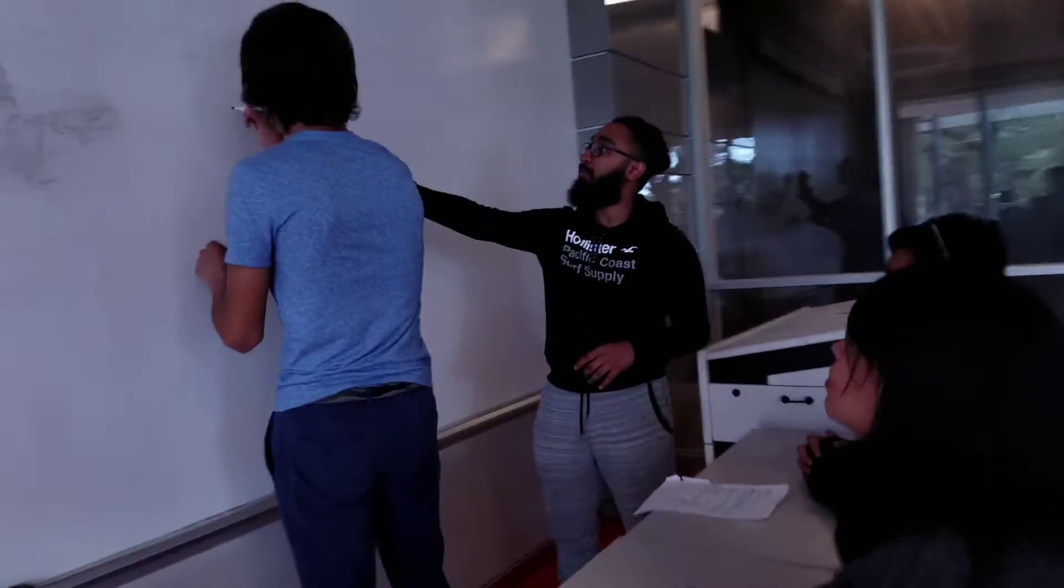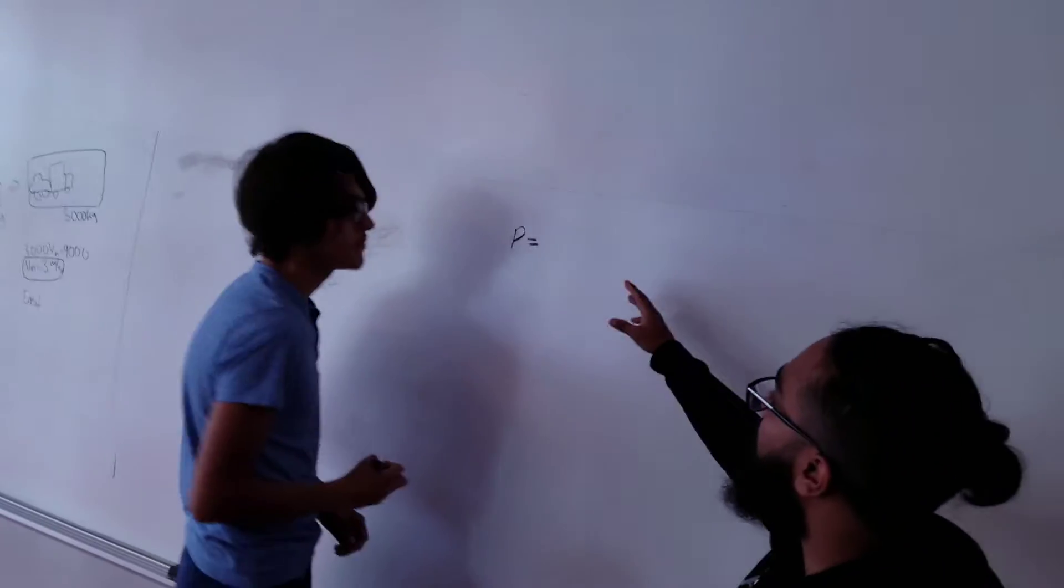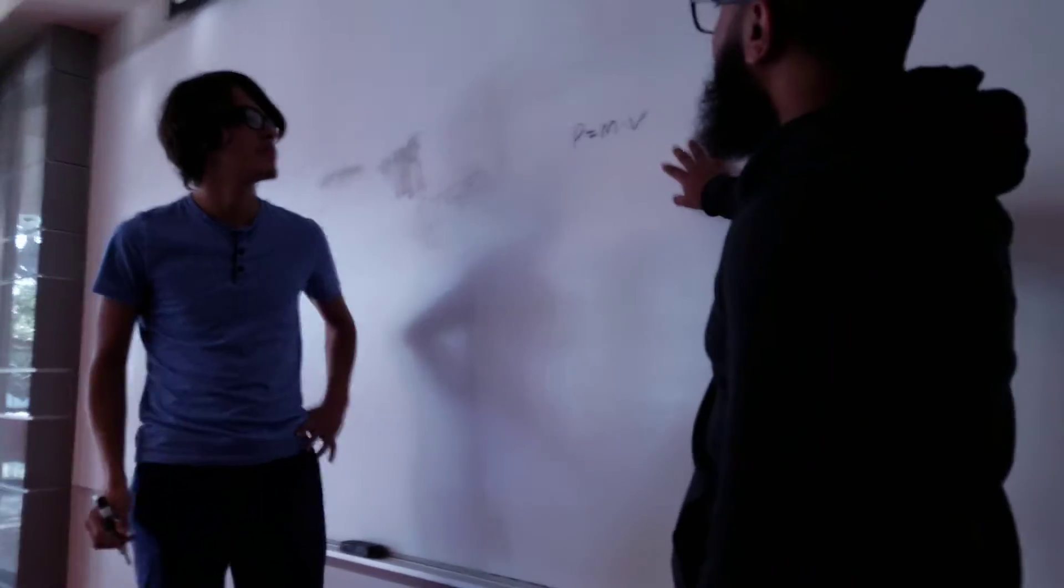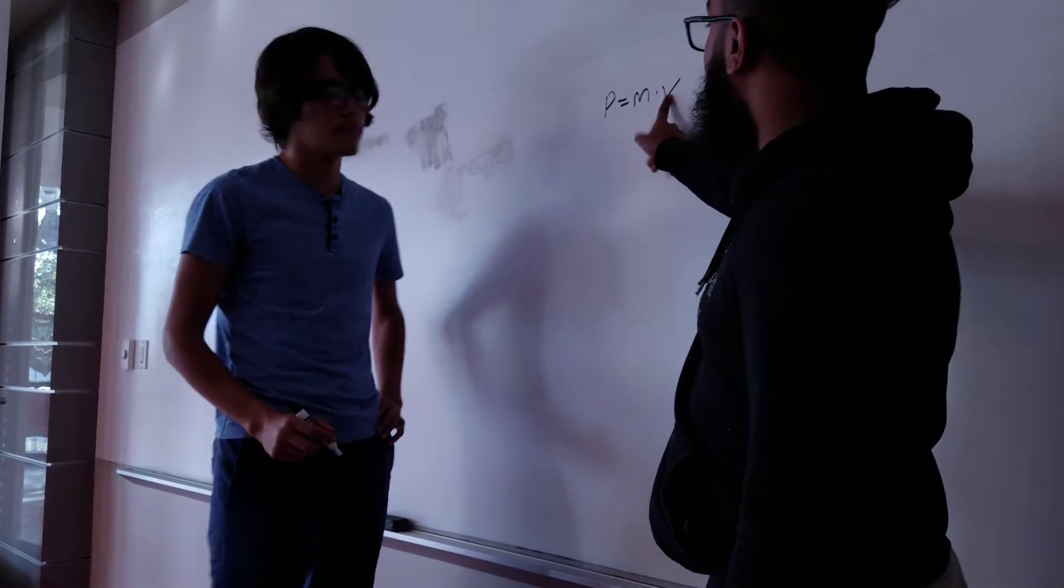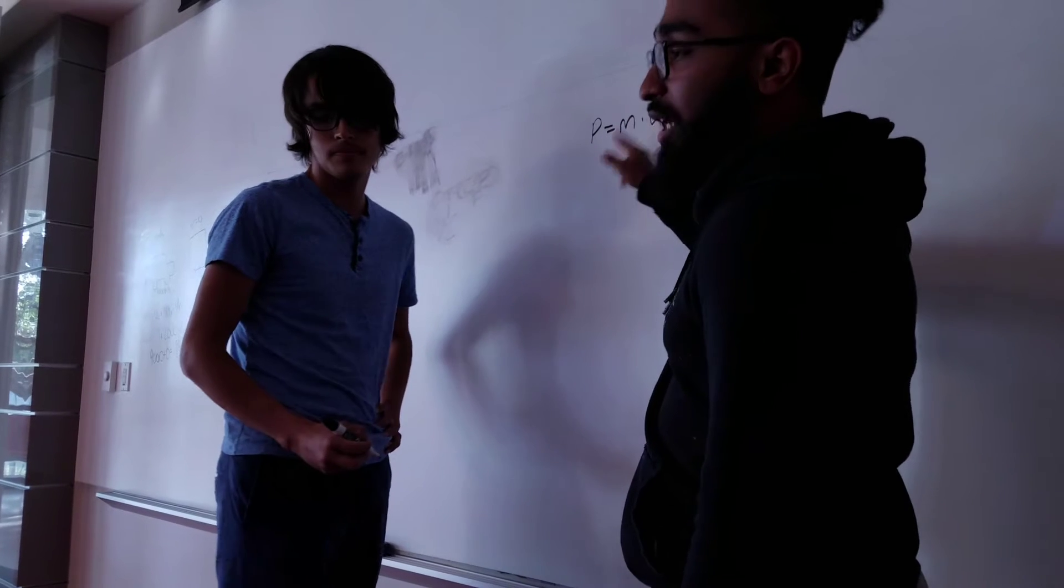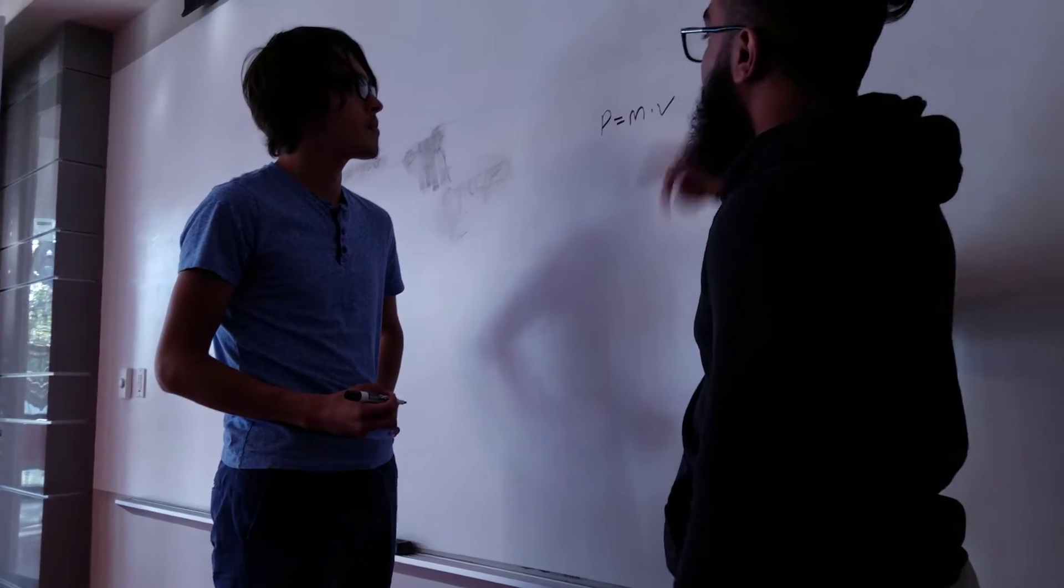Momentum, the symbol for momentum is P, and we know that momentum equals mass times velocity, M times V. Relating to this, depending on your mass and your velocity, you will have a higher momentum. They depend on each other through multiplication. Higher mass, higher momentum. Higher velocity, higher momentum.